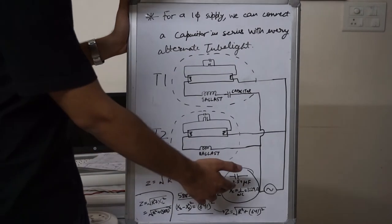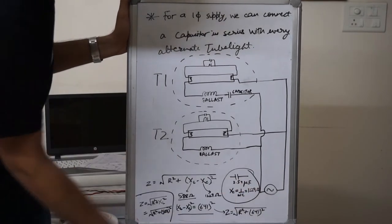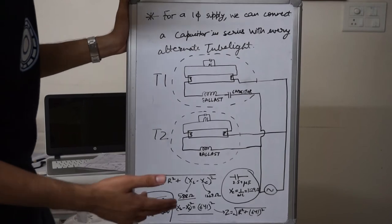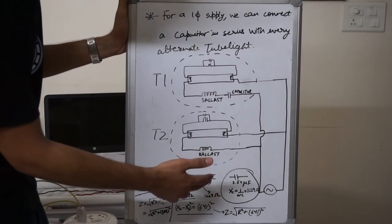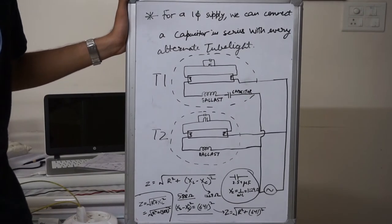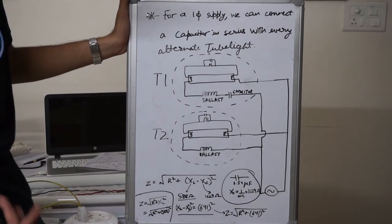If the value of the capacitor is very less, then the reactance will be very high and the tube light won't be able to switch on. And if its value is such that XL minus XC is very small, then the current will be very high, which will result in excessive heating and decrease the life of the tube light.